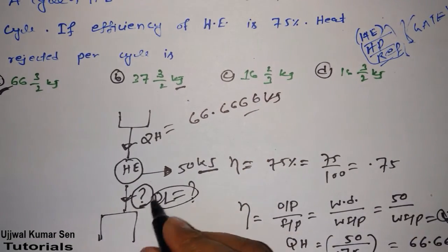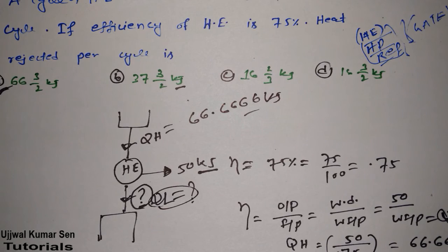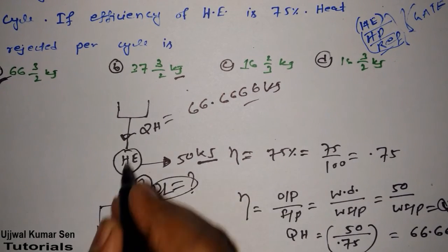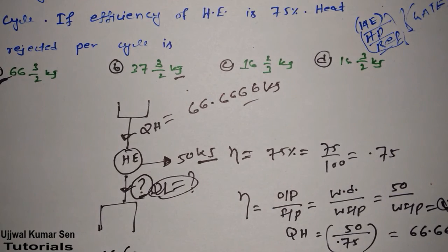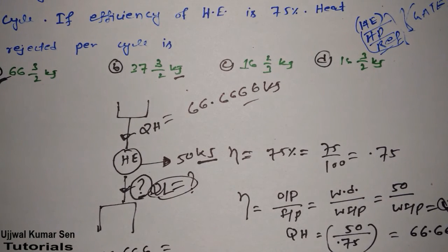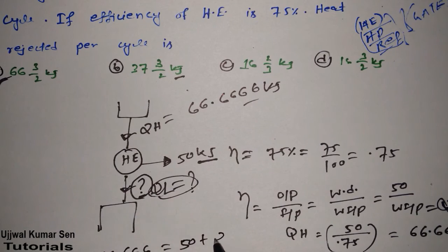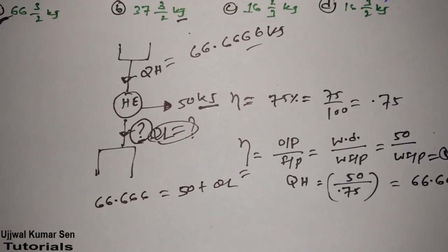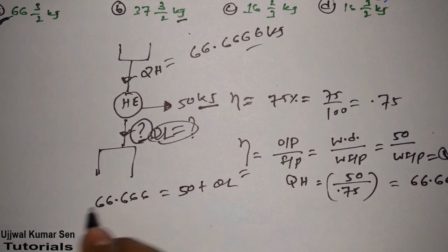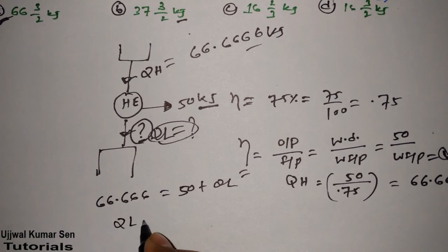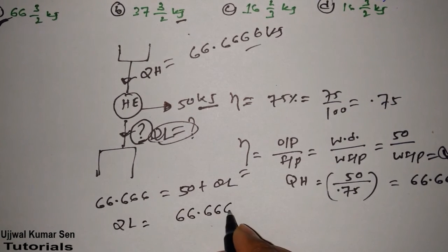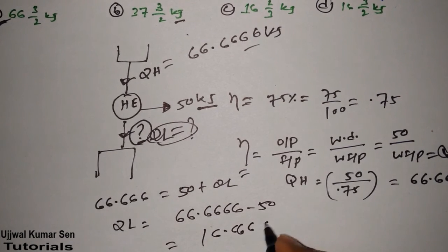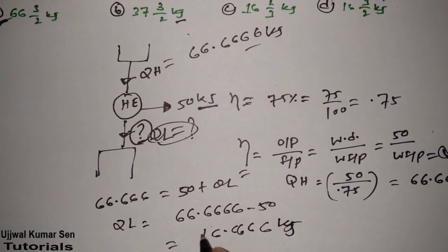But we have to find out this one. We know that again incoming is equal to outgoing. Incoming heat is equal to outgoing. So incoming is only one, 66.666, and outgoing is two: 50 plus QL. We have to find out QL. Send this 50 to this side. So what we'll get: QL is equal to 66.666 minus 50 is equal to 16.666 kilojoule.